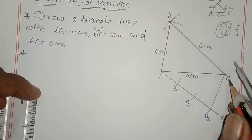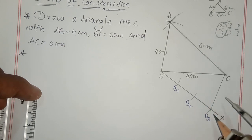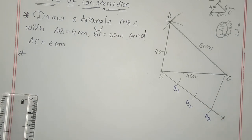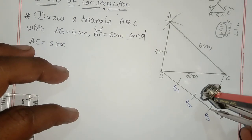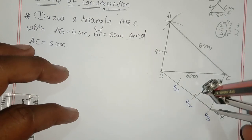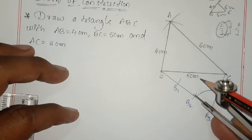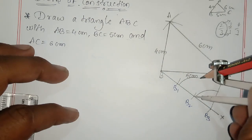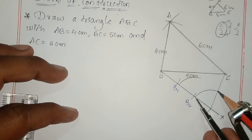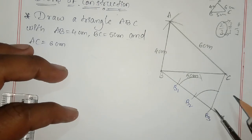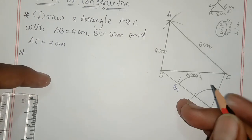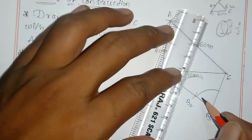From B2, draw a line parallel to B3C. To draw parallel: with the compass at a convenient radius, keep on B3 point and draw an arc. Similarly, without changing this radius, from B2 draw the same arc. Then take this arc length, keep it on the arc from B2, and cut it. Where the two arcs intersect, join that point to B and extend it. So C'B2 is parallel to B3C.